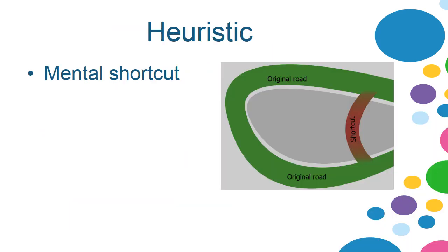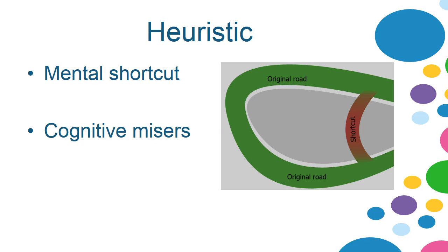A heuristic is a mental shortcut. As you can see here, we have the original road and then somebody's just taking a shortcut. Heuristics are simple things where, rather than spend a lot of time thinking about something, we jump from one point to another. We do this because we're cognitive misers — we don't like spending extra time if we can take a shortcut.